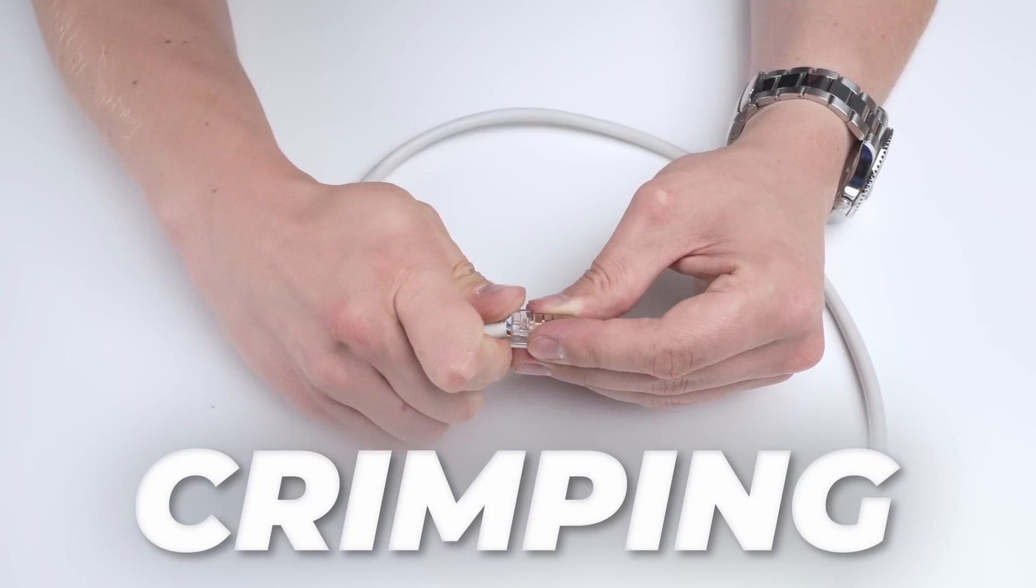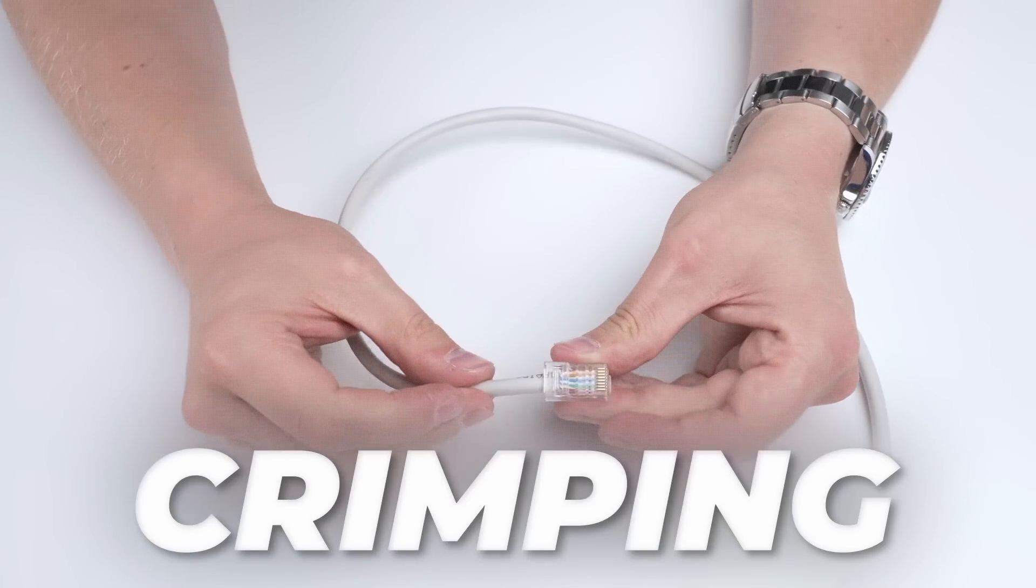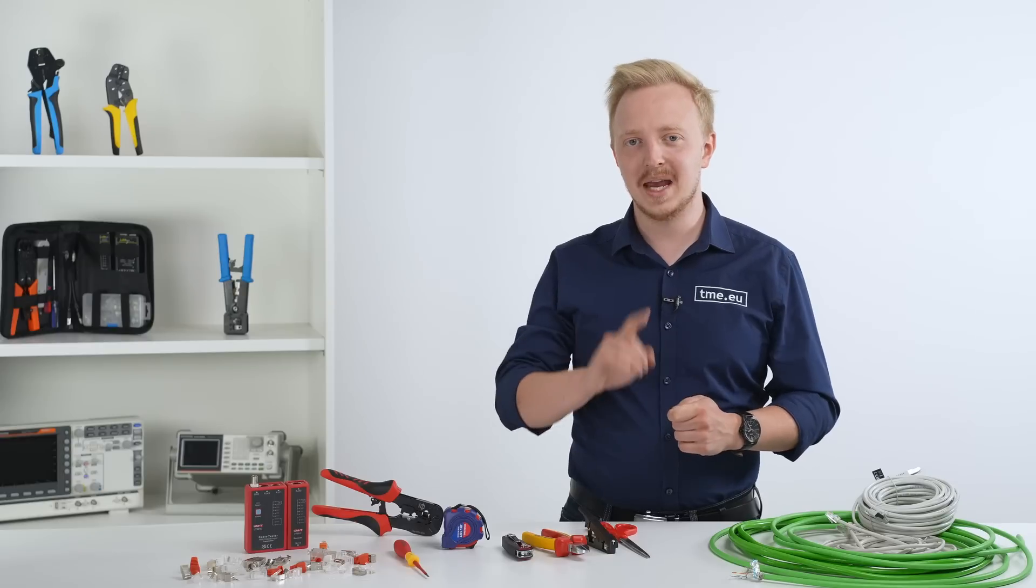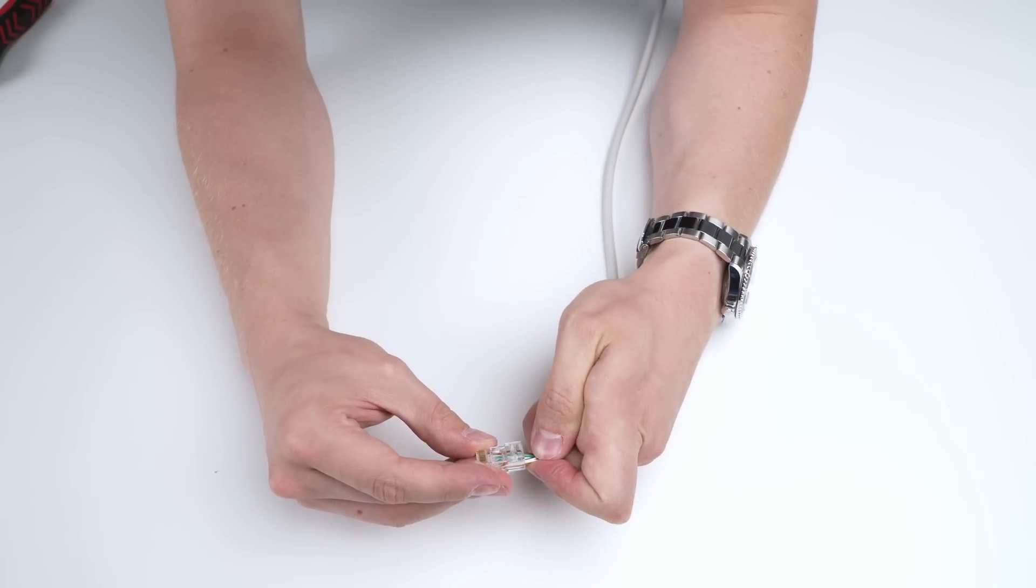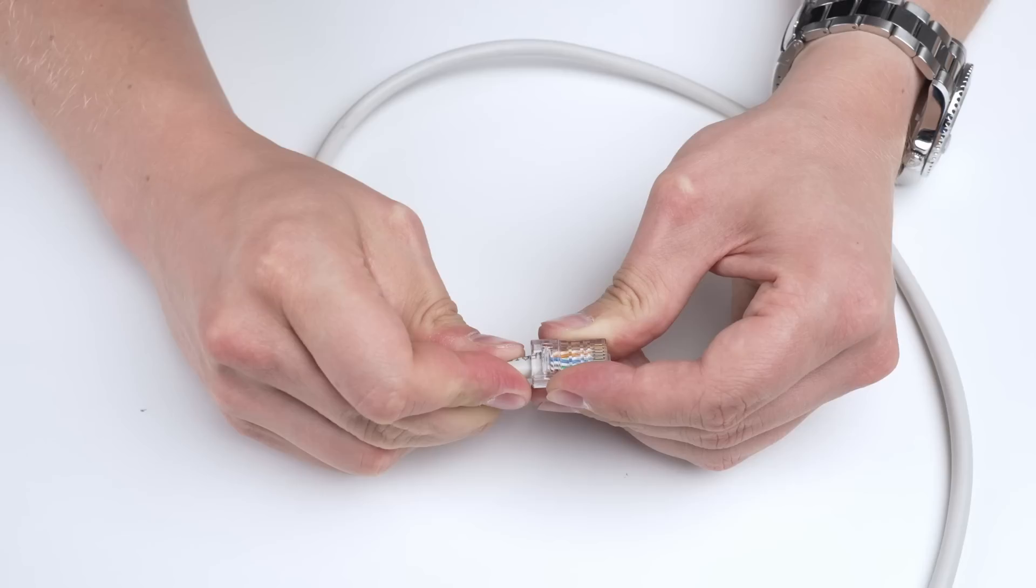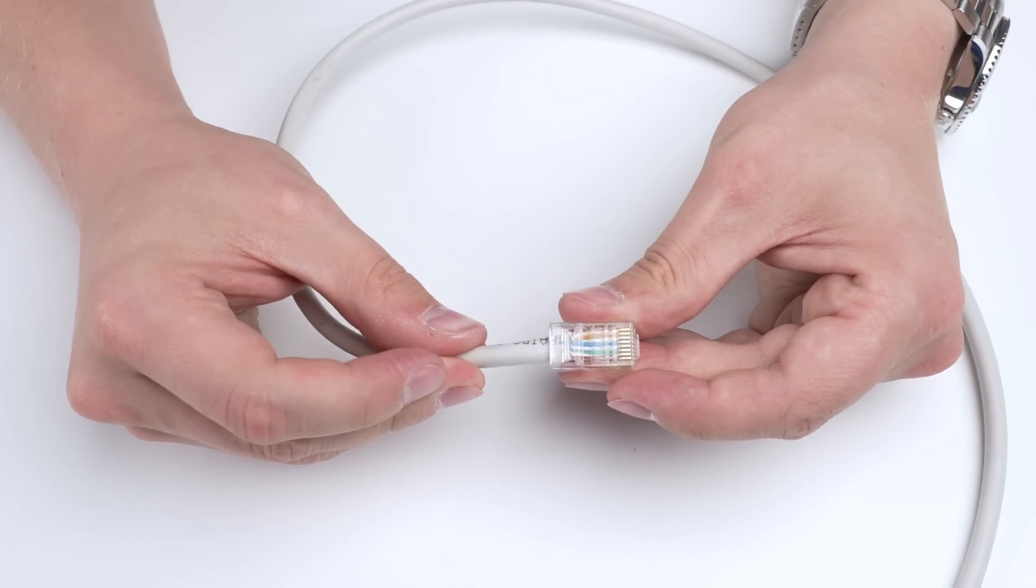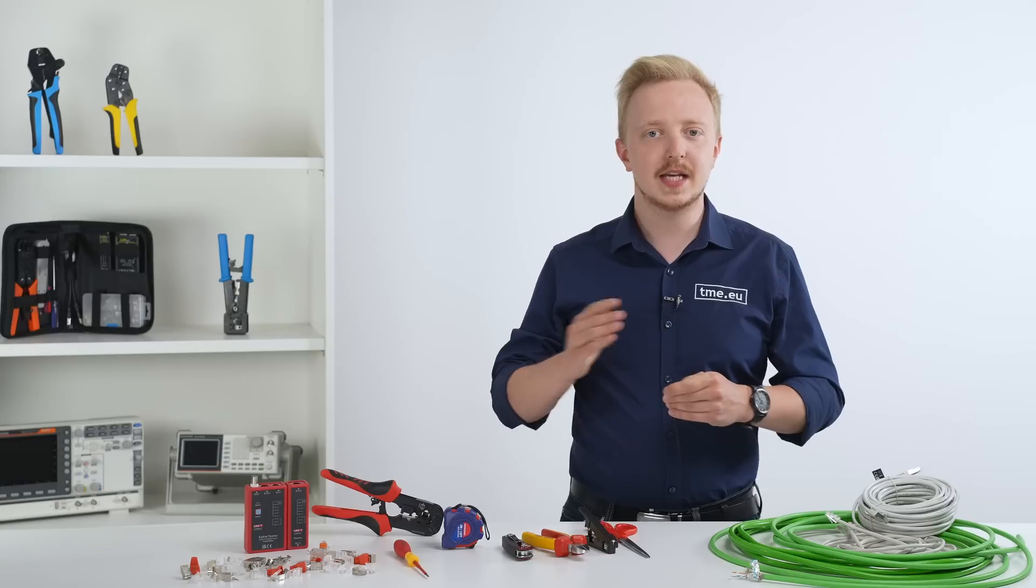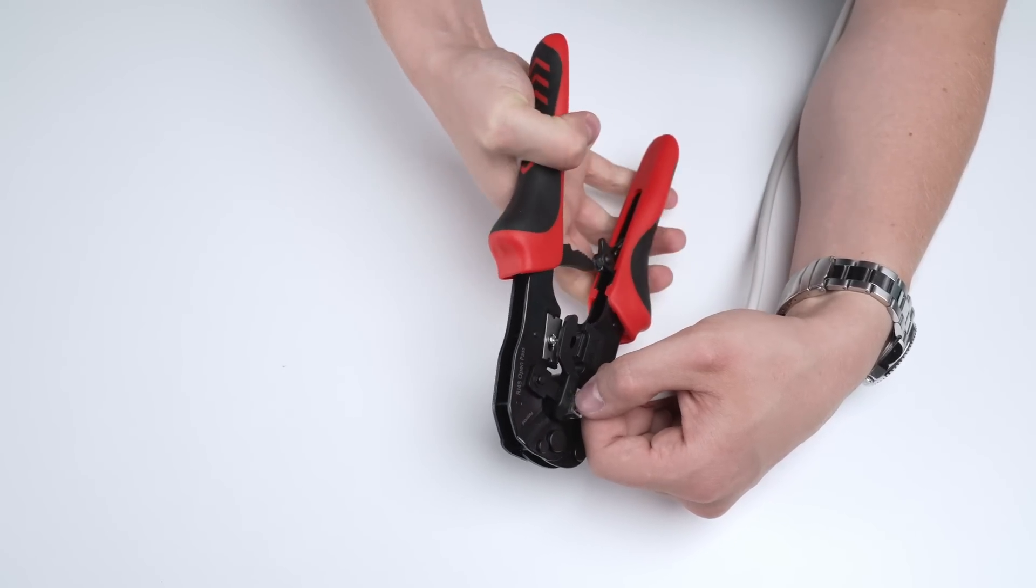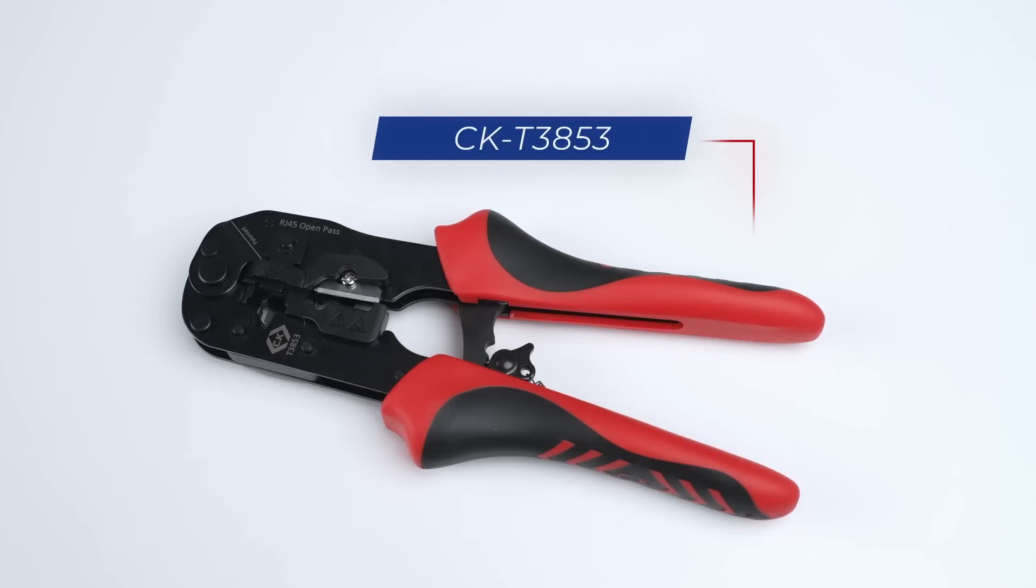Step 4. Crimp the connector. Now, while still holding the wires tight in your fingers, take a connector and insert the wires. Make sure the wires fit inside the connector in the correct order. Remember to always press the wires until they reach the end of the connector. Take the crimping tool in your hand, place the connector in its jaws and crimp. This crimping tool has a ratchet mechanism which ensures that the connector is crimped with the right amount of force.